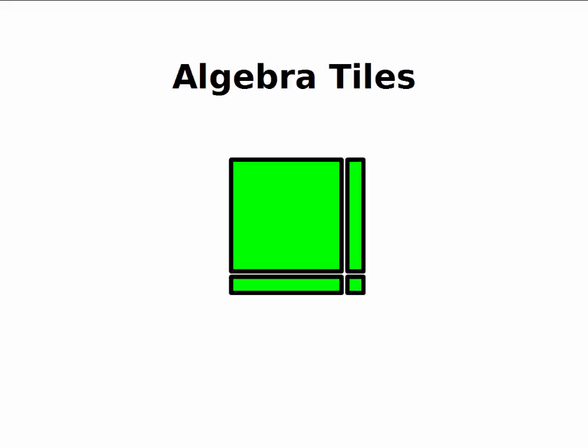So algebra tiles look like this. There's sort of four shapes: a big square and a small square, and long skinny rectangles. The rectangles are as long as the big squares on one side and as long as the small squares on the other side.